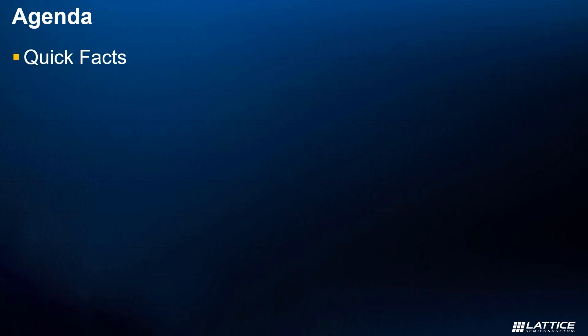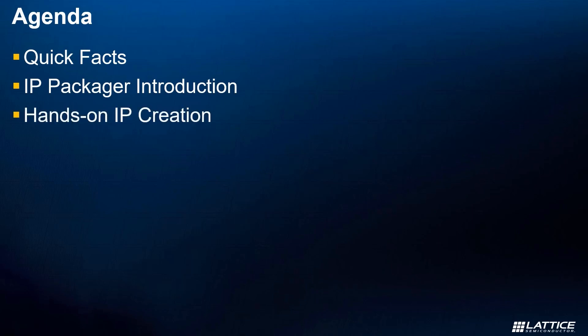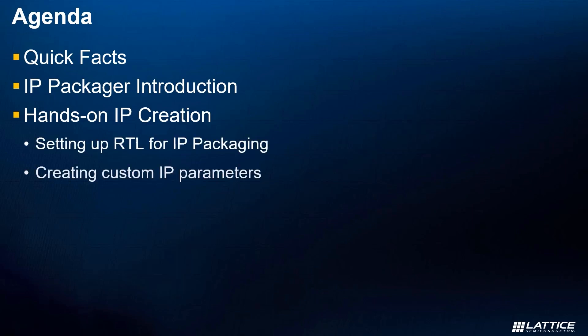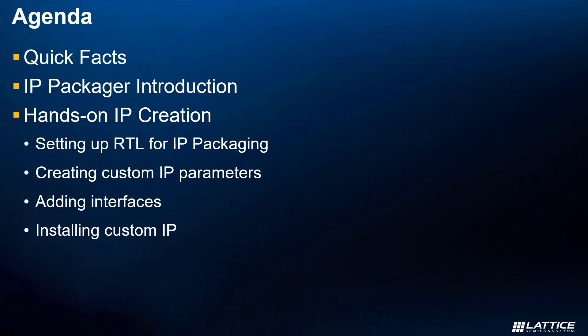After that we'll continue on by reviewing an introduction to Lattice's IP Packager so we can learn more about what it can be used for and how we can use it to generate our own IP. For the last part of this training, I'll be walking us through a hands-on demonstration covering topics like RTL setup before IP packaging, how to create custom IP parameters, how to set up bus interfaces in an IP, as well as how to install and generate custom IP in Lattice FPGA projects. So with that said, let's move on to the first portion of this training where we'll discuss some quick facts about IP in the Lattice tool flow.